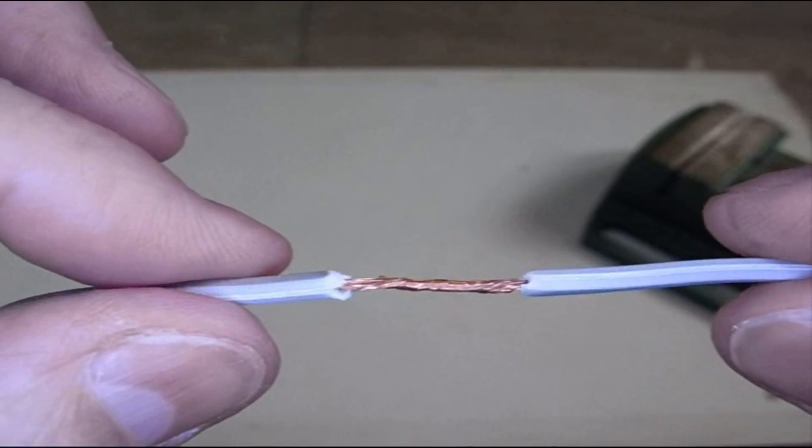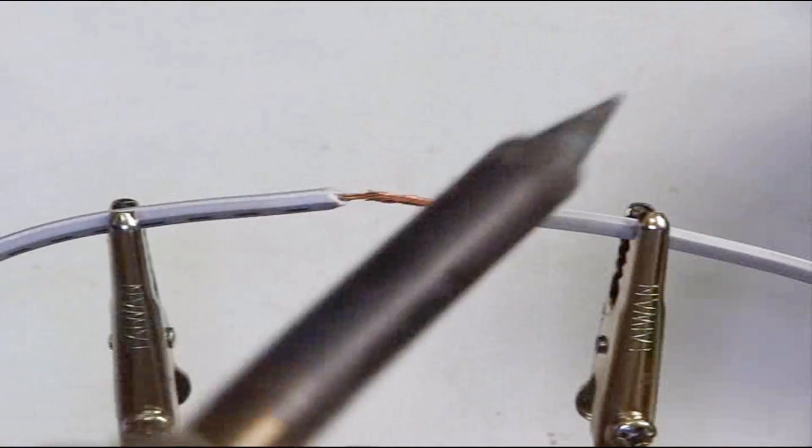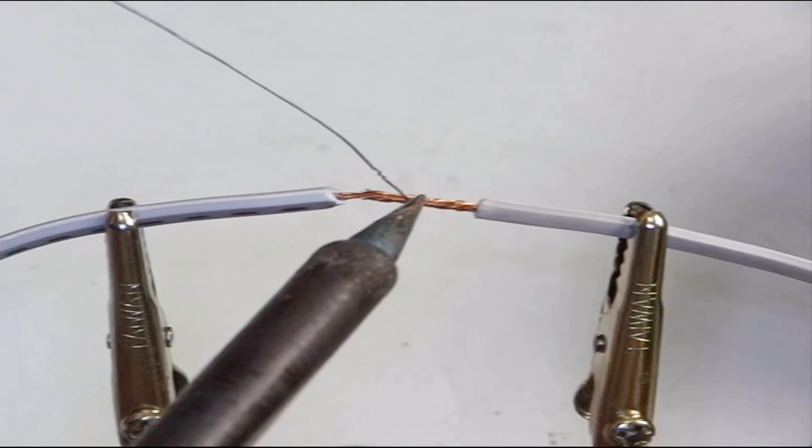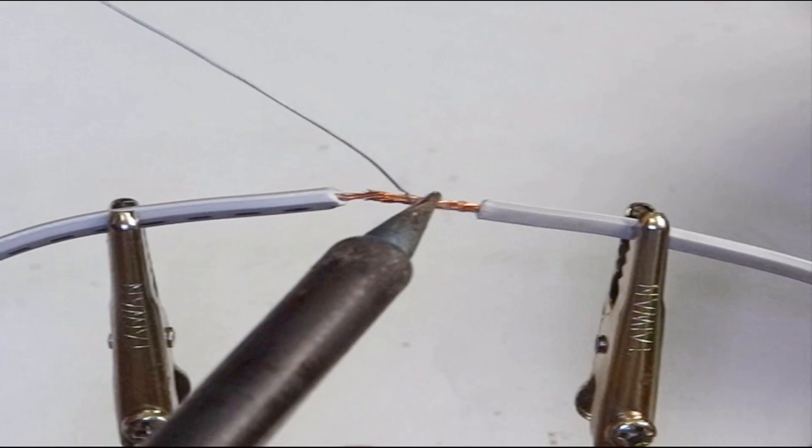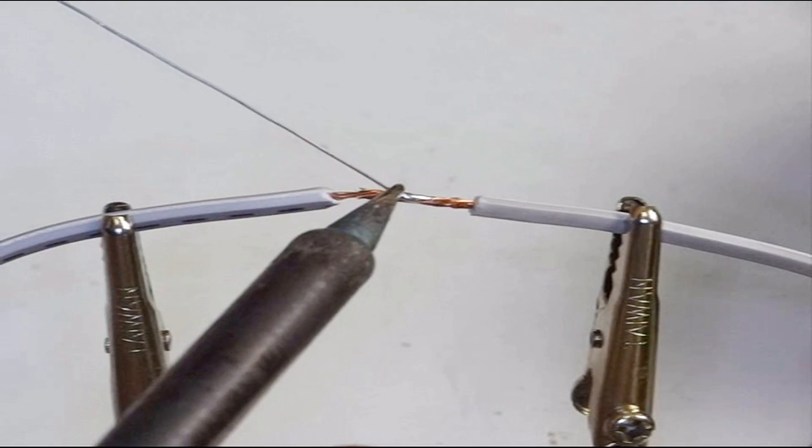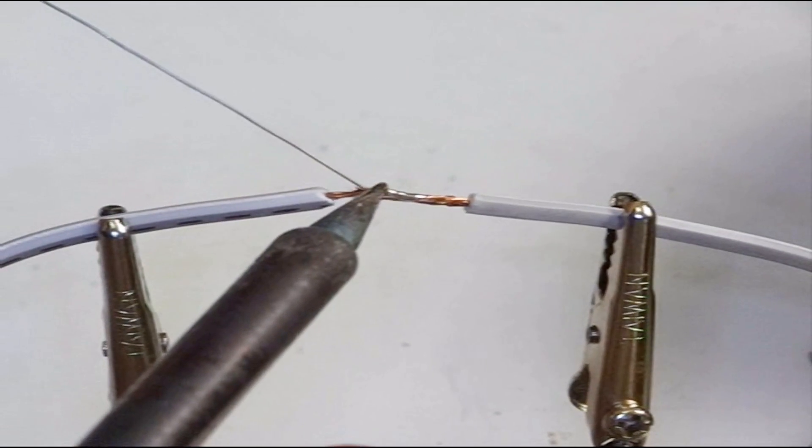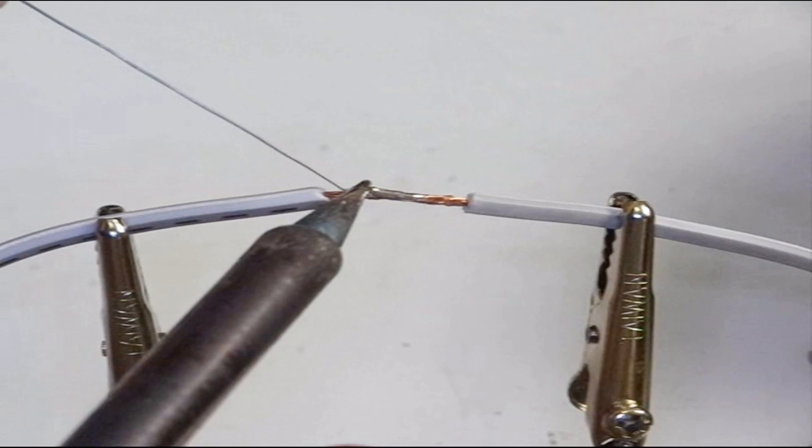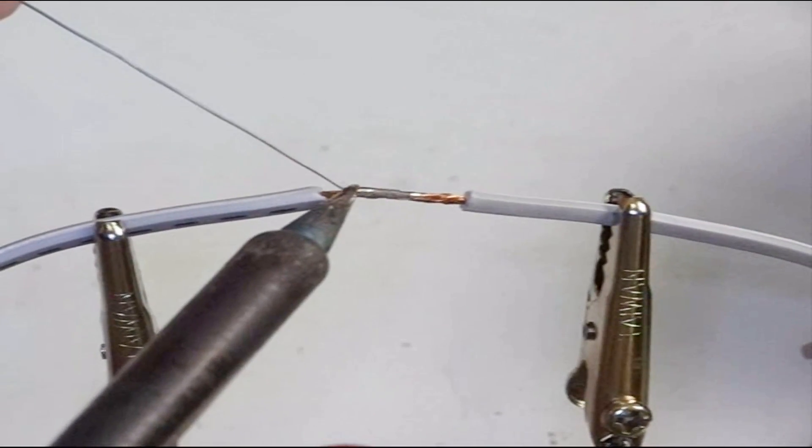Then you solder that. I'll use a little finer soldering gun. Start in the middle of my joint. Work both ways. Work out both ways. I'm using a much finer solder because I'm using a much finer wire than before.